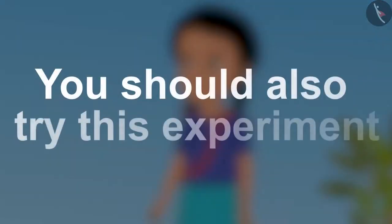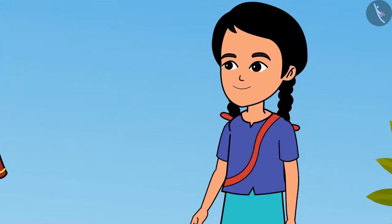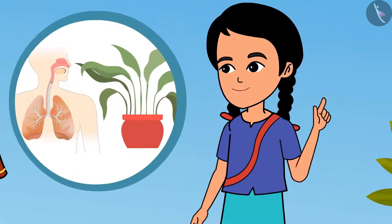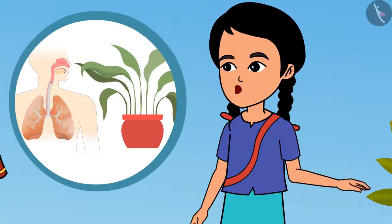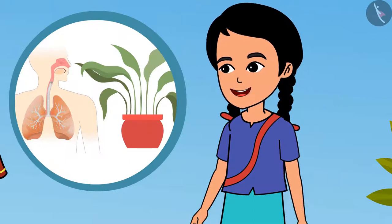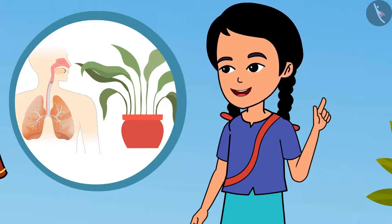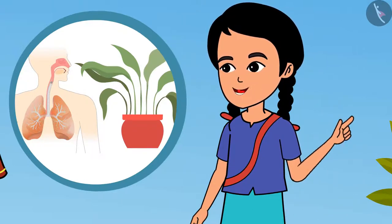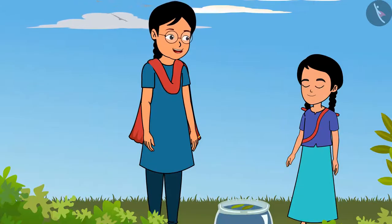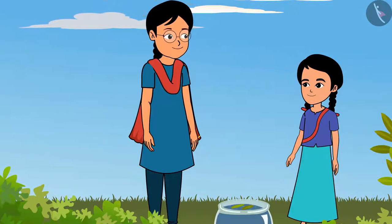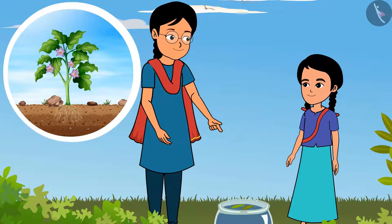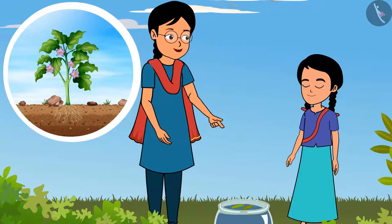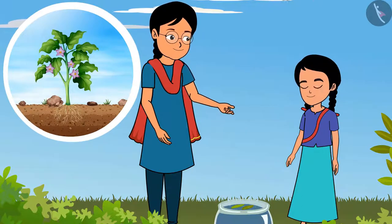Friends, you should also try this experiment at home. So is it that, like our lungs are the most important part of our respiratory system, the leaves are the most important part for plants? Rani, in plants the leaves, stems, flowers, and even the roots help in breathing.